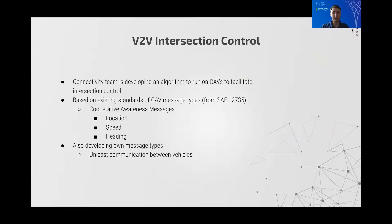The Connectivity team is developing an algorithm to run on CAVs to facilitate intersection control. It's based on existing standards of connected autonomous vehicle message types such as cooperative awareness messages which include location, speed and heading of the vehicle. We're also developing our own message types for unicast communication between the vehicles.